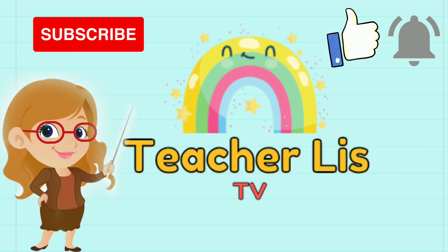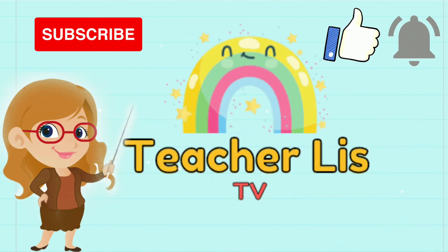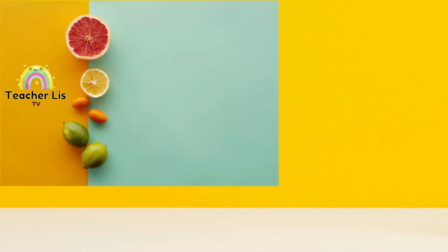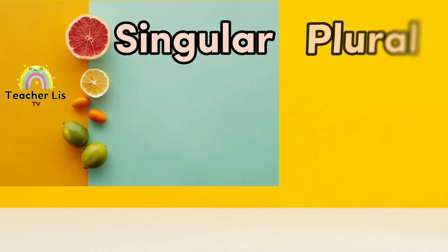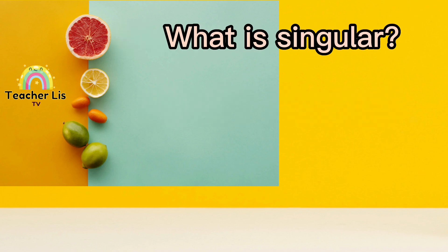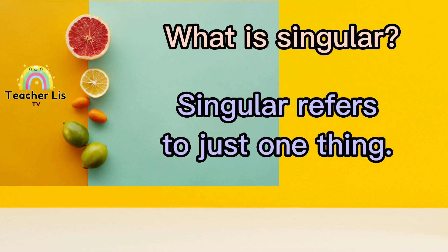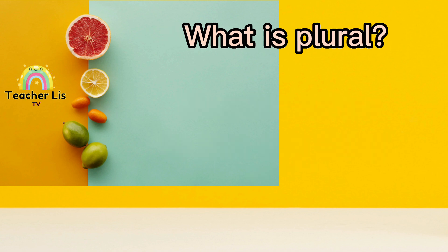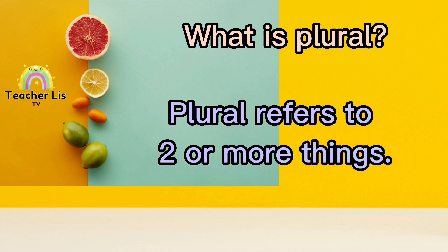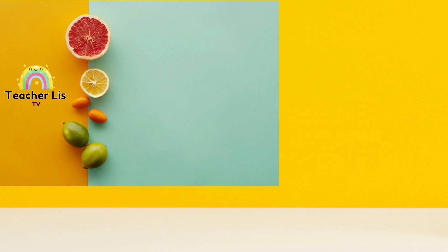Teacher list TV. Today you will learn singular and plural fruit names. What is singular? Singular refers to just one thing. What is plural? Plural refers to two or more things. Now listen and repeat.